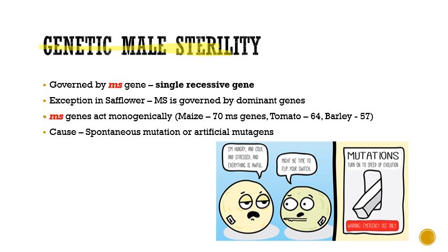Genetic male sterility is majorly governed by a single recessive MS gene. In the majority of plant species, GMS is controlled by a single recessive MS gene, though there are exceptions — for example, in safflower where male sterility is governed by dominant genes. These MS genes act monogenically, and researchers have found some 70 different MS genes in maize, 64 in tomato, and 57 in barley. The major cause of genetic male sterility is through spontaneous or induced mutations.